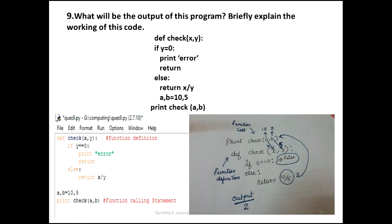Here is the program: check(x, y) with y equal to 0. This is the function definition using the def keyword, function name, and arguments x and y as formal arguments. We check if the divisor value is 0 and print an error, otherwise return x divided by y.